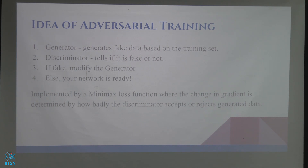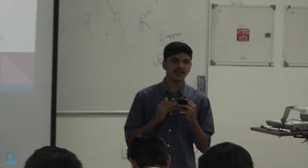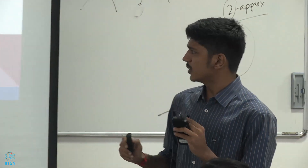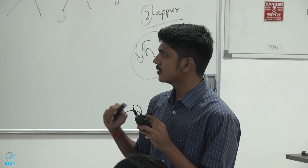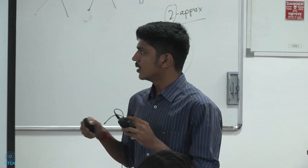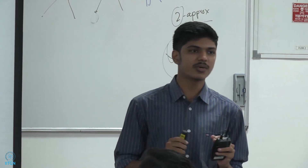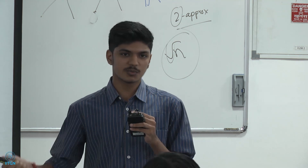Let's talk about the idea of adversarial training. There have been other networks — convolutional neural networks — that have been there for quite some while. But what helps here is adversarial training where the generator and discriminator are actually fighting each other to win such that they produce the best outcome. The idea is simple: the generator generates fake data, the discriminator tells if it is fake or not. If it is fake, you again modify the weights of the generator; else your network is ready. This is implemented by a minimax loss, which is minimizing the maximum probability.